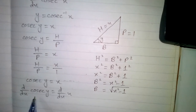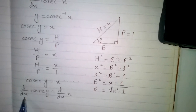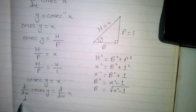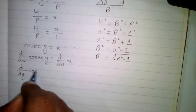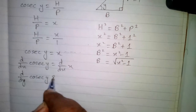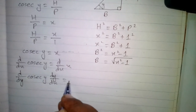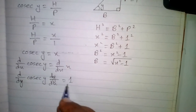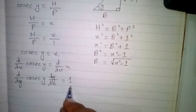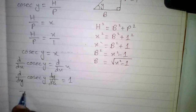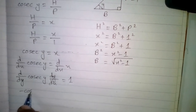We cannot take the derivative of cosec y directly with respect to x, so we apply the chain rule. The derivative of cosec y with respect to x equals 1, because the derivative of x is 1. The derivative of cosec y is minus cosec y cot y, multiplied by dy by dx, which gives us dy by dx equals minus 1 upon cosec y cot y.